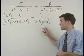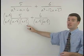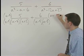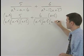Since the second denominator is missing an (a plus 2), we multiply top and bottom of the second fraction by (a plus 2).